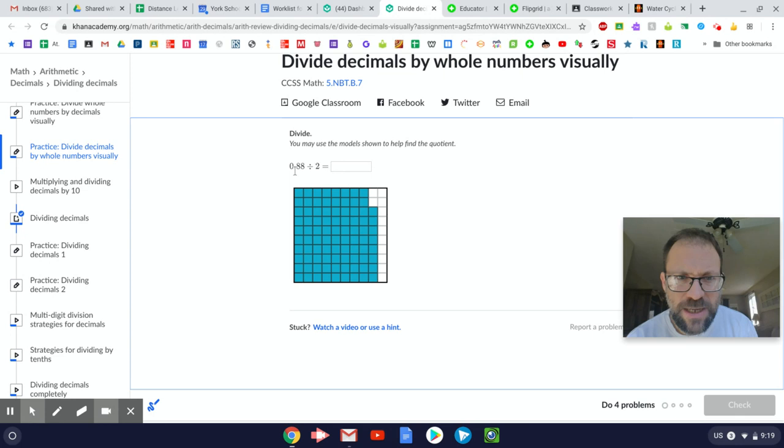So the problem says is eighty-eight hundredths divided by two, the whole number two. So in other words, I have to break up these eighty-eight hundredths into two equal groups.